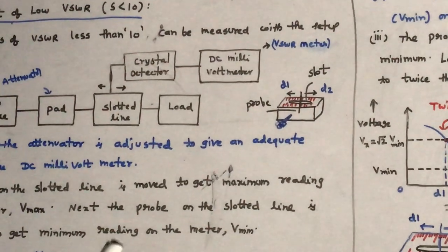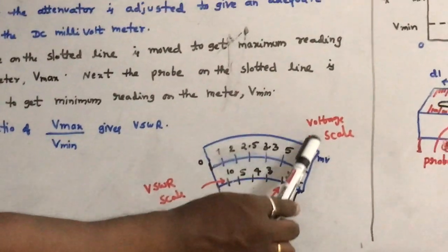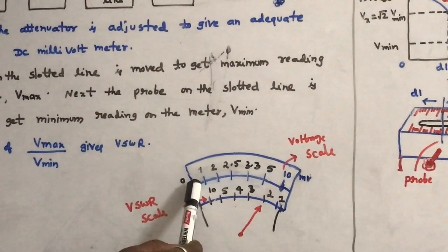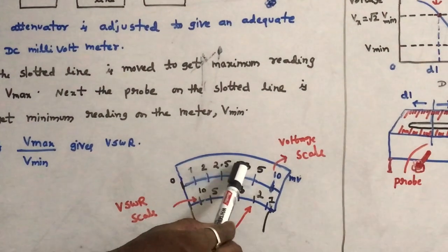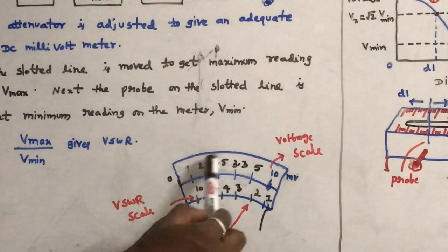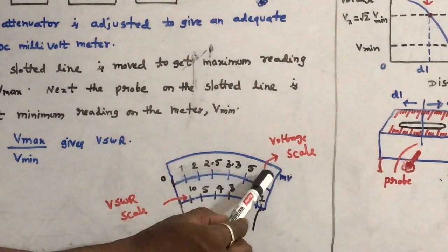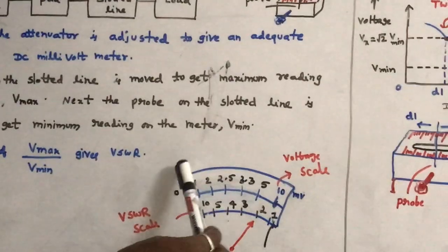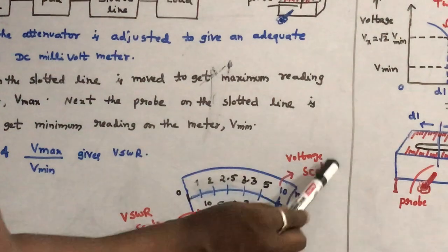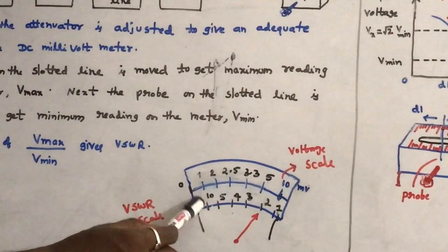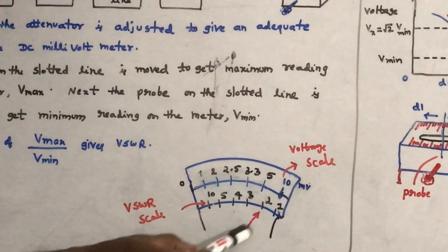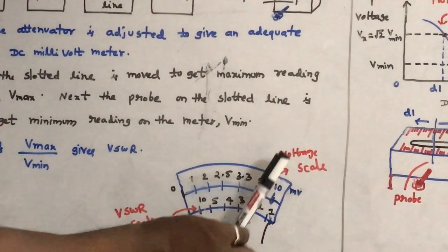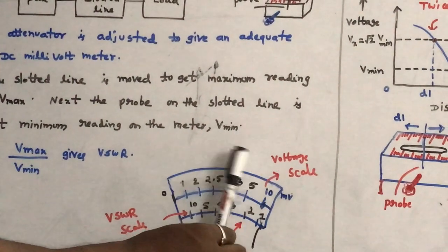The general diagram of the VSWR meter consists of two scales. The upper scale shows voltage readings in millivolts: 1, 2, 2.5, 3.5, 10. The lower scale shows corresponding VSWR values: 1, 2, 3, 4, 5, 10. A pointer indicates the reading on these dual scales.